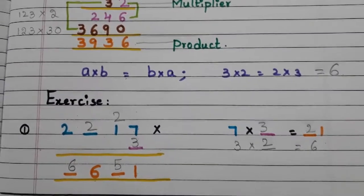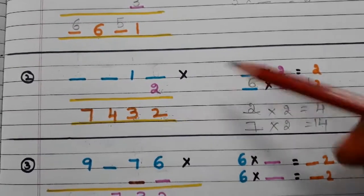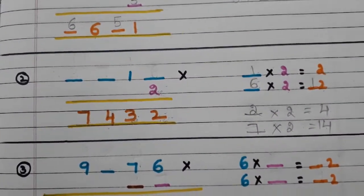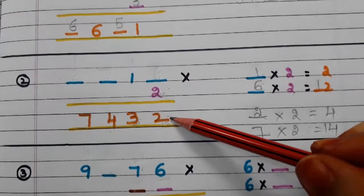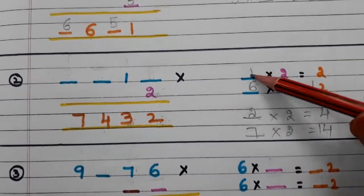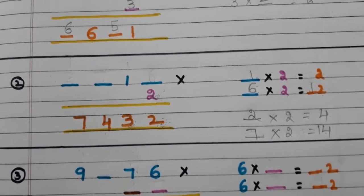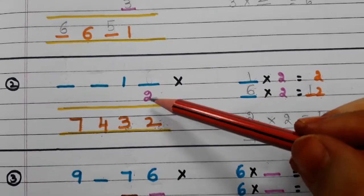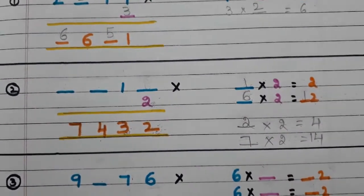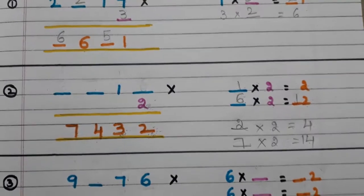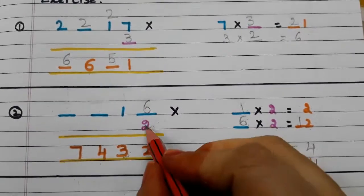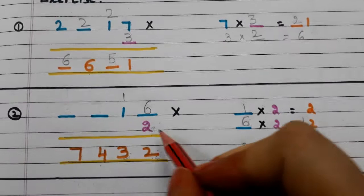Now let us go to the next example. Here we have the multiplier and we have to find the digits in the multiplicand. 2 is there and the result also has 2. With what number do we multiply 2 to get 2? We have two options: 1 two is 2, or 6 twos are 12. If we select 1, then 2 ones are 2, but 3 won't appear in the 2-table without a carry, so we need a carry. So we select 6: 2 sixes are 12, carry 1. 2 ones are 2, plus 1 equals 3.